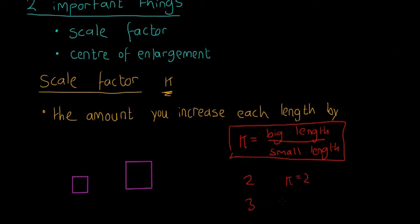That's kind of the more complicated way of getting it. If you want just a basic way, if you want to increase something by two, then you make k is equal to two. If you want to increase it by three, you make k is equal to three. That's basically what your scale factor or k will be.